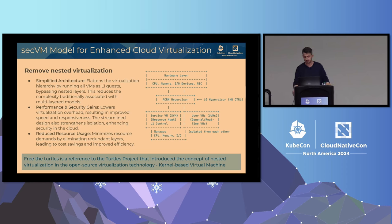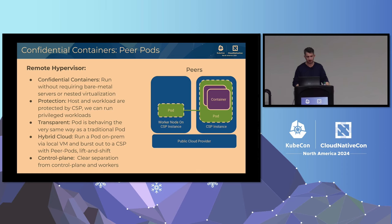On the right side is just an example of how you could accomplish this with the ACRN hypervisor — a modern type-one hypervisor. Similar model to Xen: you have a service VM doing all resource management, and on the same level the user VMs. 'Free the Turtles' is a reference to the Turtles project, which introduced the concept of nested virtualization in KVM.